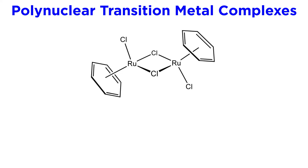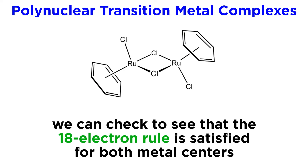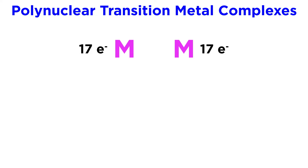It is often the case that each metal center in such a complex is bound to the same set of ligands. Therefore, it can be easy to check whether the 18-electron rule is being satisfied for each metal center. A common situation is that each metal will have an electron count of 17, and then to get to 18, they will each contribute one electron to a covalent bond between them, and this bond may be strong or weak, depending on a variety of factors.